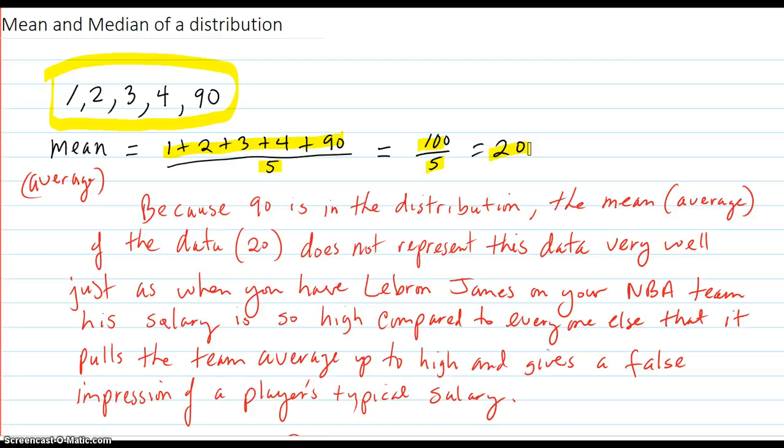But that doesn't really represent that distribution that well. Most of the numbers are smaller down here. It's only this one up here that's pulling the mean forward, or up.